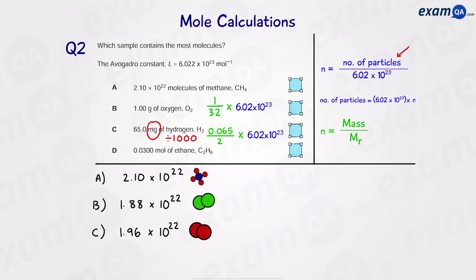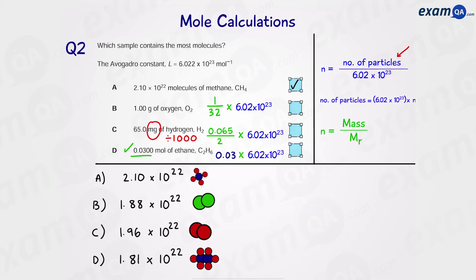Moving on to D — we've already got the number of moles, so all we have to do is times it by Avogadro's constant. That gives us the number of particles. We can see that the answer is going to be A.